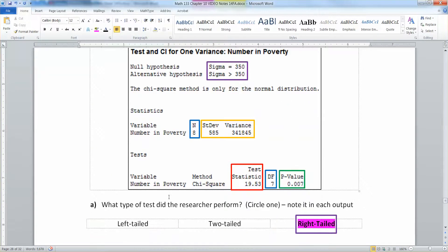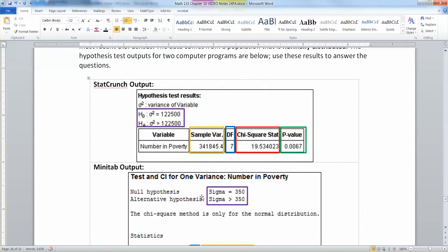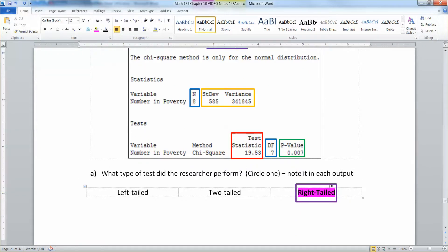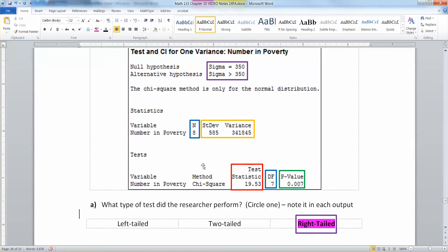So what type of test did the researcher perform? Well, you can see right away in either test, you can see it's a right-tailed test because of that greater than in there. So these are right-tailed tests, and I gave it like a purple box there.